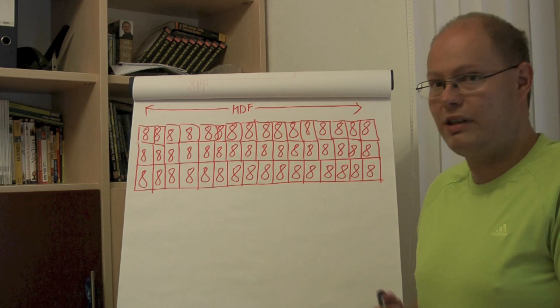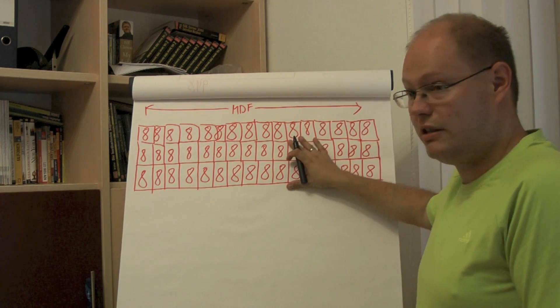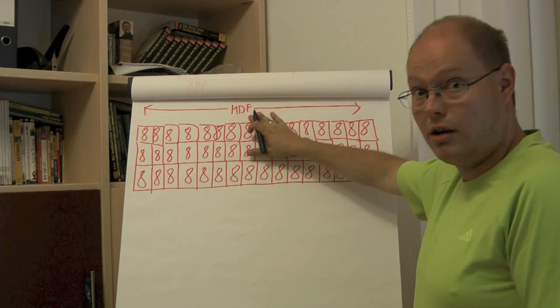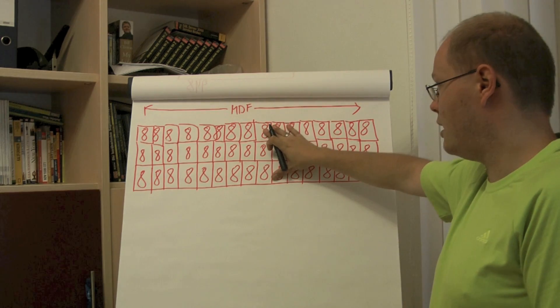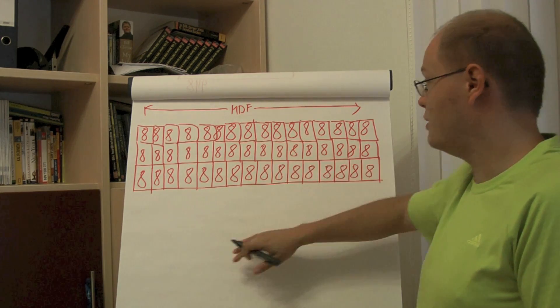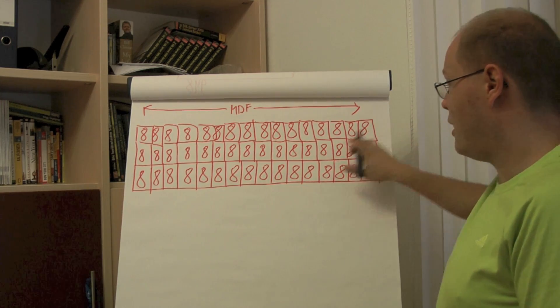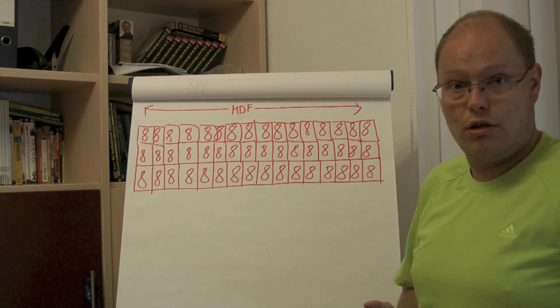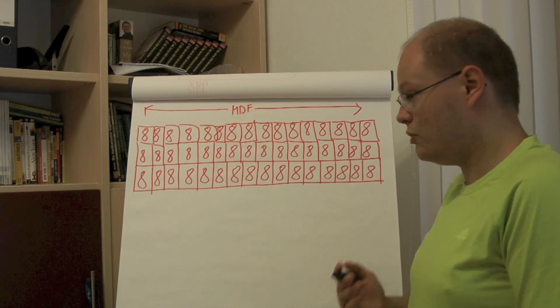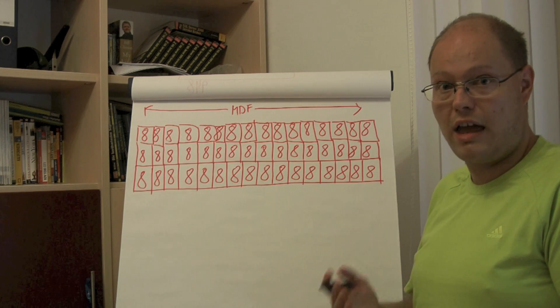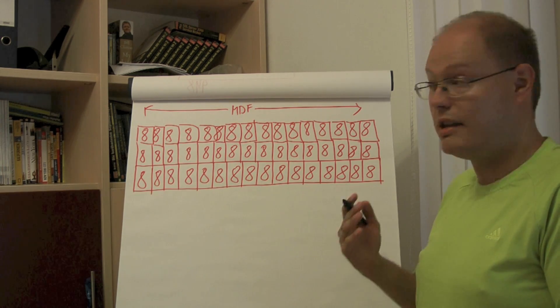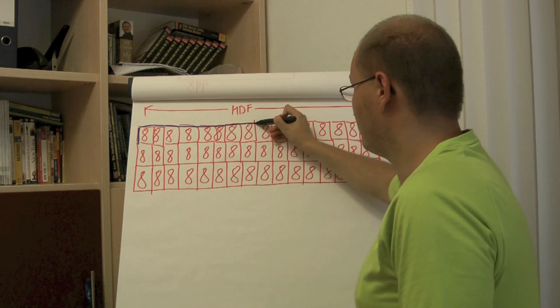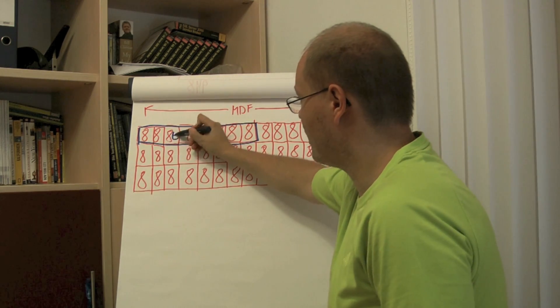To get started with extents I have illustrated here on the flipchart an MDF file with 48 different pages. As you can see we have 16 pages in a row and we have in sum 3 rows. What is SQL Server now doing with the so-called extents? SQL Server just groups 8 pages together to extents. So in our case SQL Server takes the first 8 pages and creates an extents.